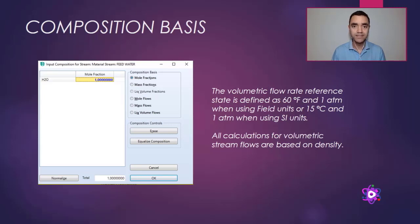In the composition basis, the definition of pressure and temperature for the calculation is 60°F and 1 atm if you're using field units, or 60°C and 1 atm if you're using SI units.